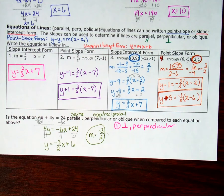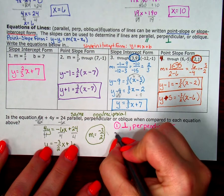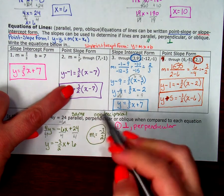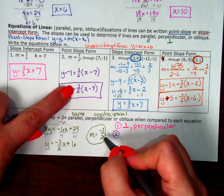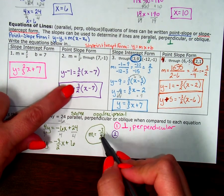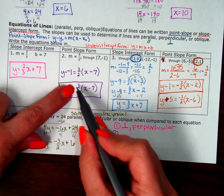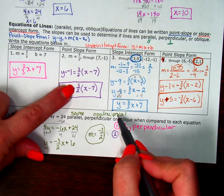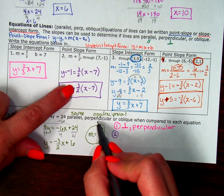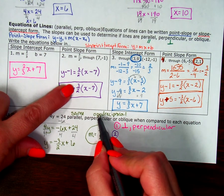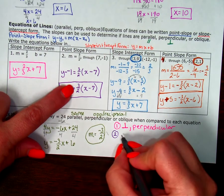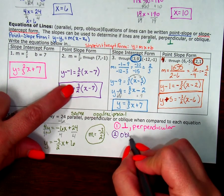For number 2, y plus 1 equals 3 halves times x minus 7: I have 3 halves and negative 3 halves. They're not the same, so not parallel. Are they opposite reciprocals? They are opposite — positive 3 halves versus negative 3 halves. But are they reciprocals? 3 halves and 3 halves — they have not been flipped. Both conditions must be met for perpendicular. Since they're only opposite but not reciprocals, these are neither parallel nor perpendicular — so we call them oblique.